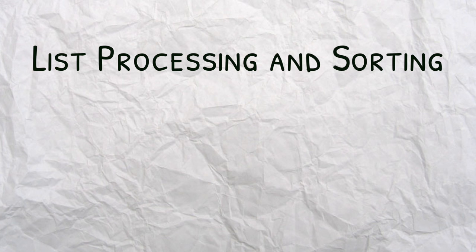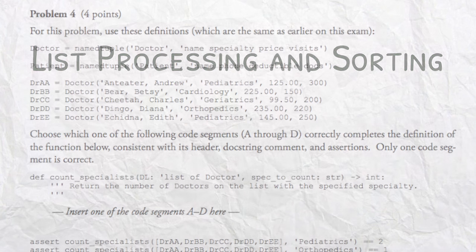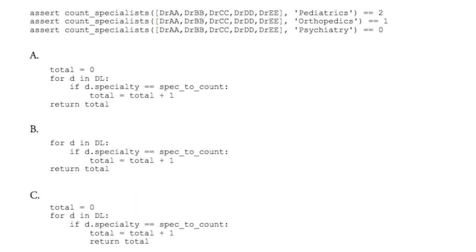Alright, so example four is list processing and sorting. And I have an example here from the second midterm from winter 2015, which was earlier this year before we started school. So this is processing list of named tuples in this instance. So as you see at the top we have a Doctor named tuple which has a name, specialty, price, and visits. And we have a Patient named tuple which has a name, phone, deductible, and docs. I assume that stands for documents. And if we look below, we have a definition here that says def count_specialists. DL is list of doctors and spec_to_count is a string. And it returns an int value. What this function does is it returns the number of doctors on the list with the specified specialty.